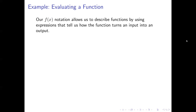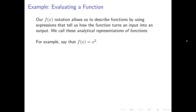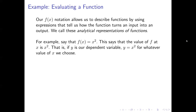The f(x) notation gives us a way to describe functions by providing a rule or formula for turning an input into an output. We call these analytical representations of functions. For example, we might say f(x) = x². Once you pick a value for x, you square it to get the associated value of y. Another way to put that is: y = x² for whatever value of x we might choose.